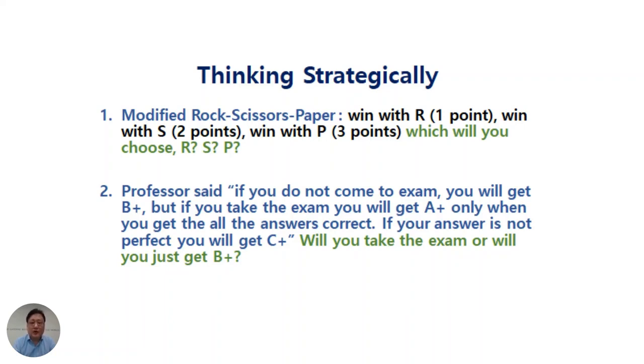Now, if you win with rock, you will get one point, which means automatically if you lose with scissors, you will lose one point. If you win with scissors, you get two points, which means if you lose with paper, you will lose two points. If you win with paper, that would be three points, which means if you lose with rock, that would be losing three points.